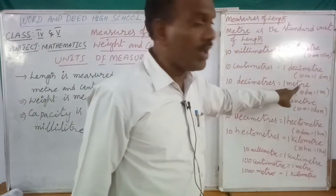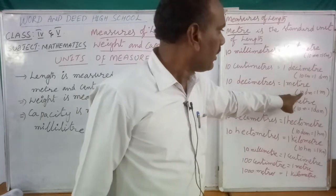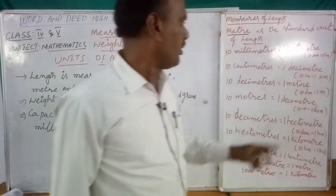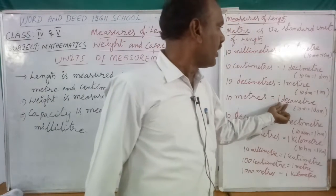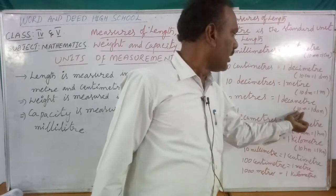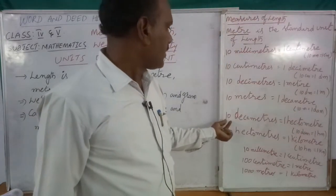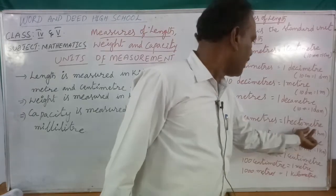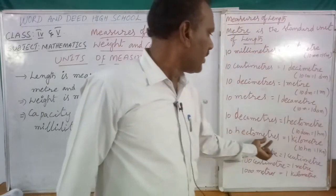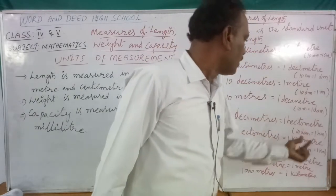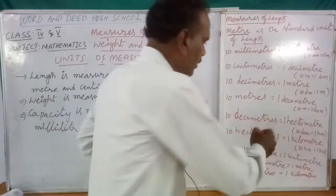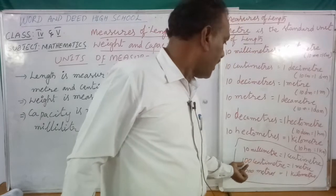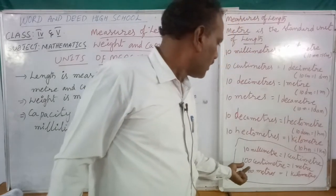10 centimeters equal to one decimeter — dm means decimeter. 10 decimeters equal to one meter. 10 decameters equal to one hectometer, denoted hm. 10 hectometers equal to one kilometer. So in summary: 10 millimeters equal one centimeter, 100 centimeters equal one meter, and 1000 meters equal one kilometer.